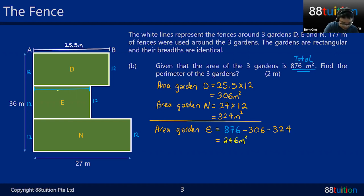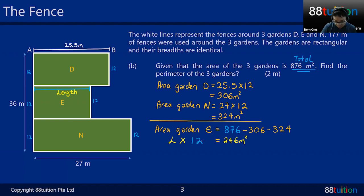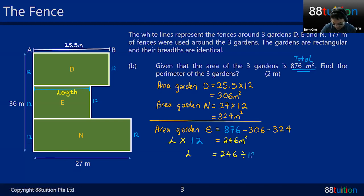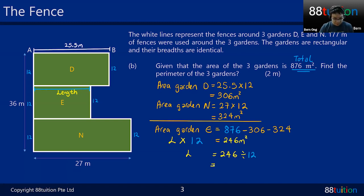Now I can find the length of garden E. Length times breadth equals area, and all breadths are 12. So the length of garden E = 246 ÷ 12 = 20.5 meters.